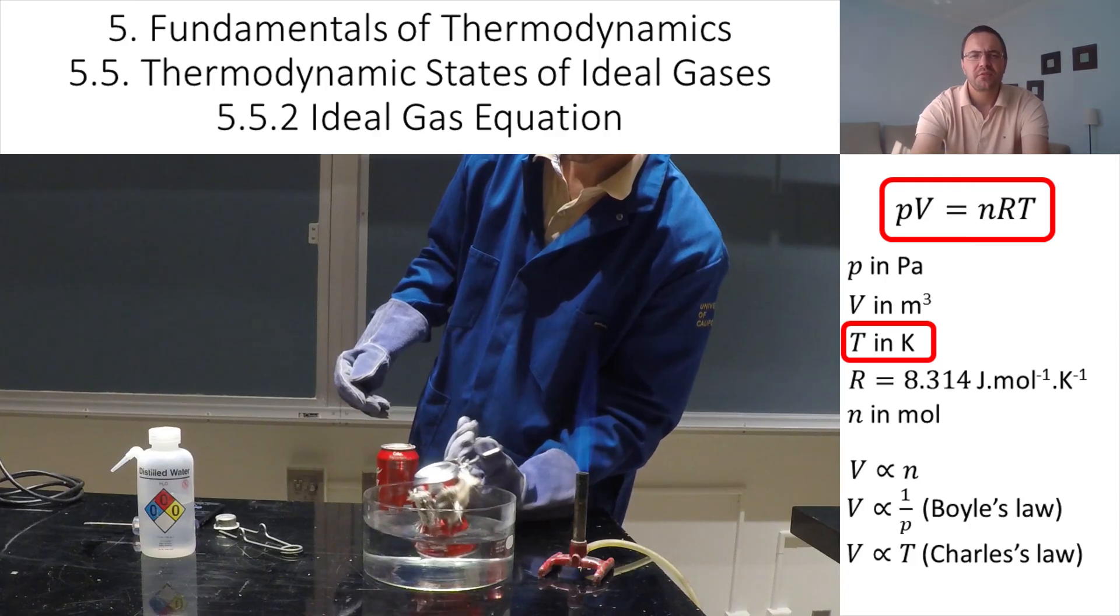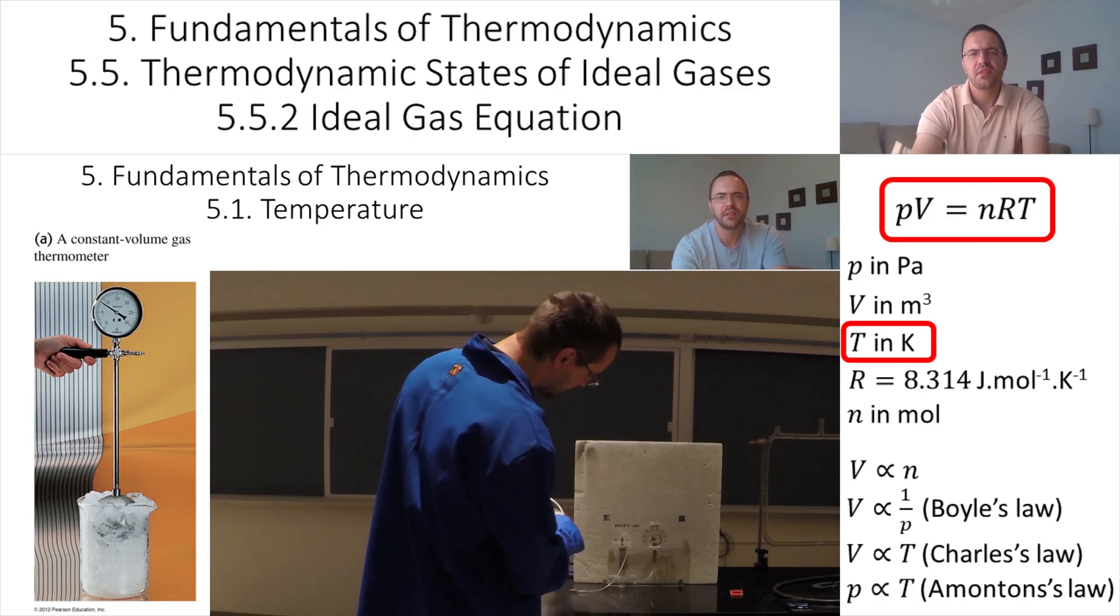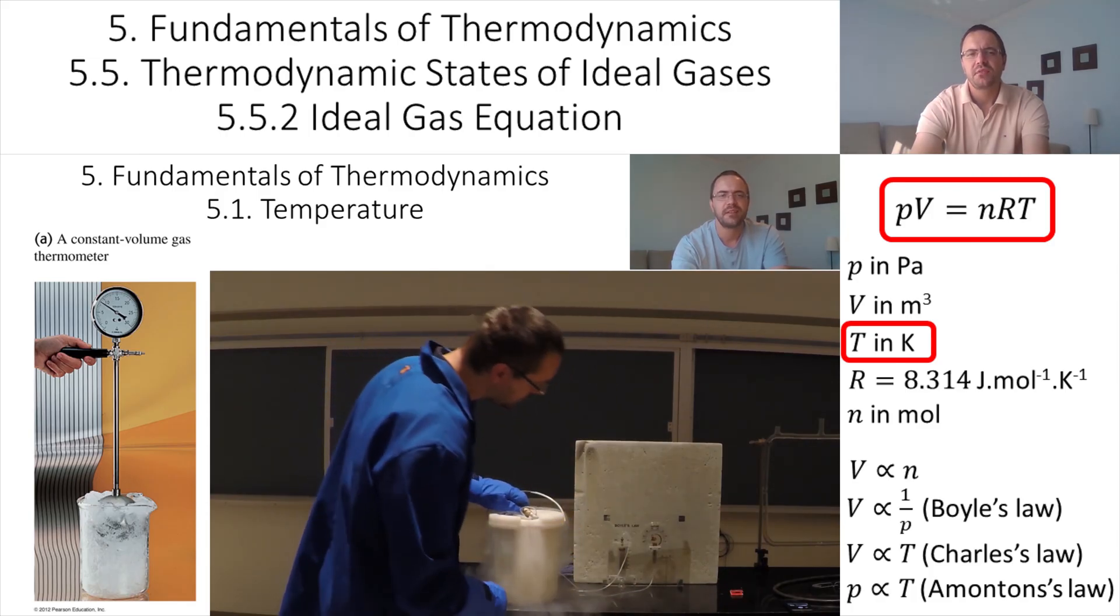Okay, let's come back to PV equal to nRT. You also see that the pressure is proportional to the temperature. Again, this also works only if the temperature is in Kelvin, and this is known as Amontons's Law, after Guillaume Amontons.